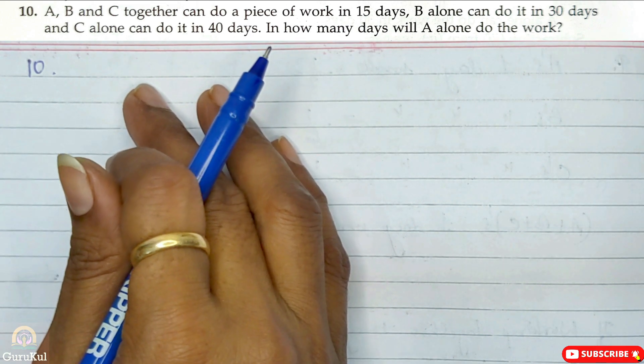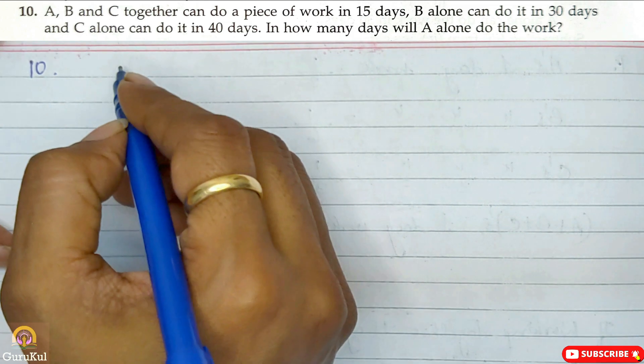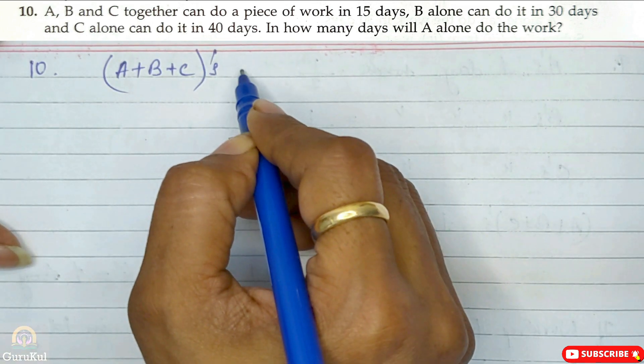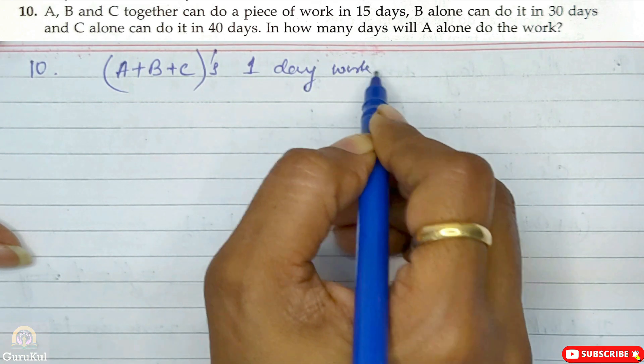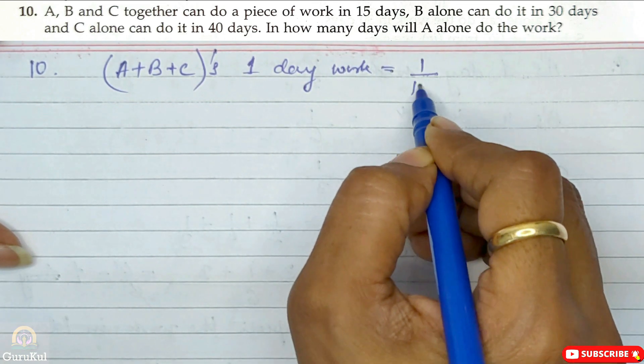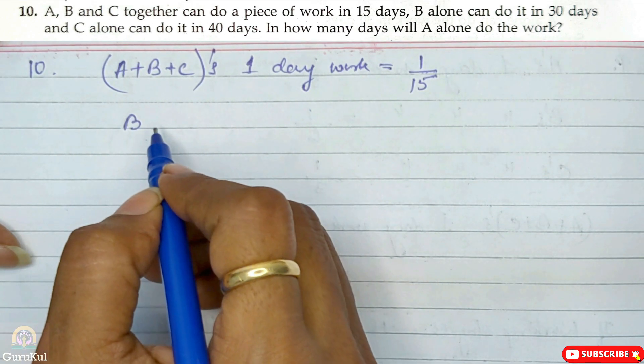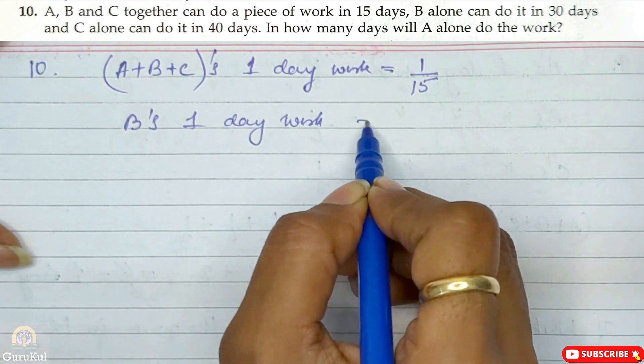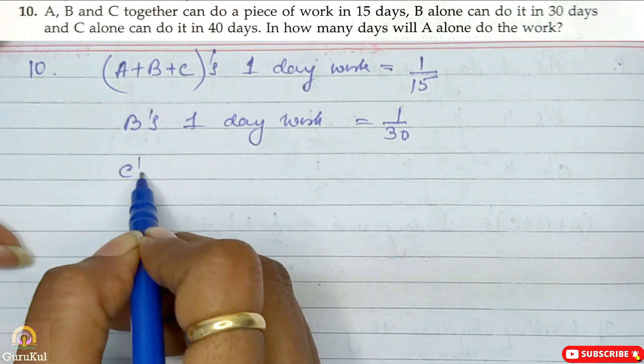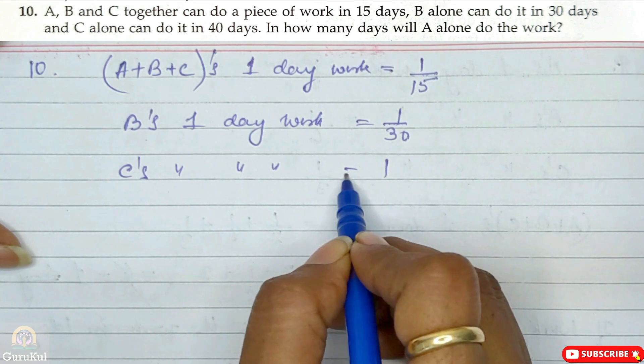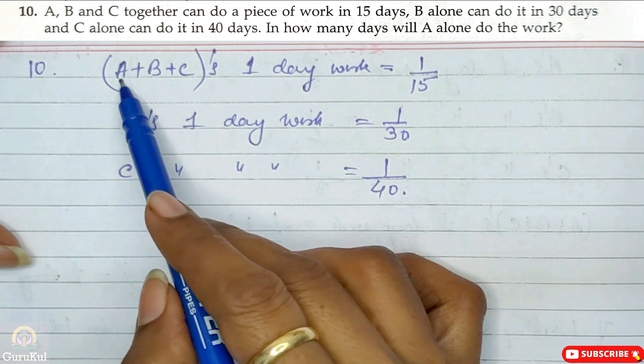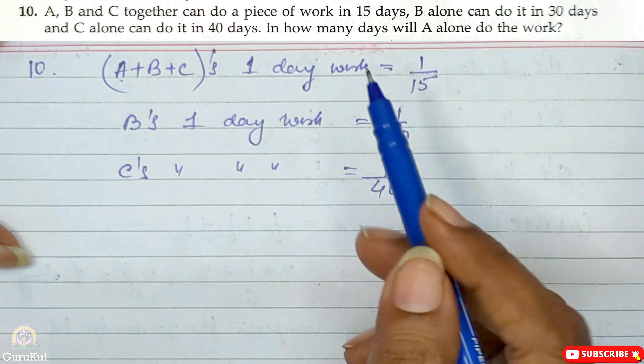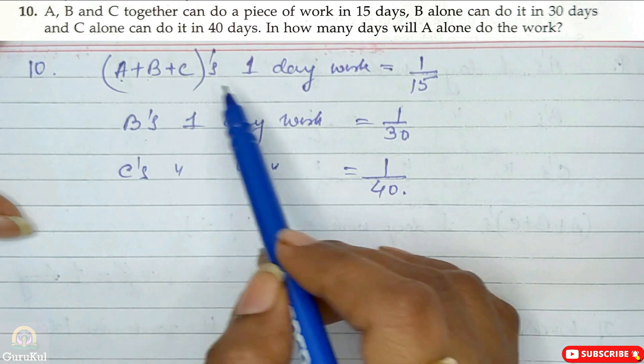So here we are going to start with 1 day work. So what do we need to do? So this is A plus B plus C when they were working together, right? Their 1 day work is equal to 1 by 15. So B's 1 day work will be 1 by 30. And C's is 1 by 40. Yes, it is very simple.